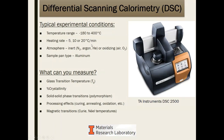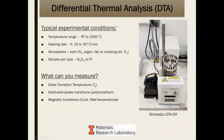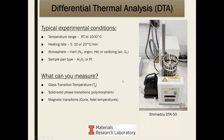Heating rates for DSC are similar to TGA. For our instrument — a TA Instruments Q-series DSC — the temperature range goes from about liquid nitrogen temperatures up to around 400°C. We also have a DTA instrument at MRL, which is that older technique that can go to very high temperatures. It is more difficult to convert the energetic transitions into actual energy units, but you can still identify when transitions occur and at what temperature.